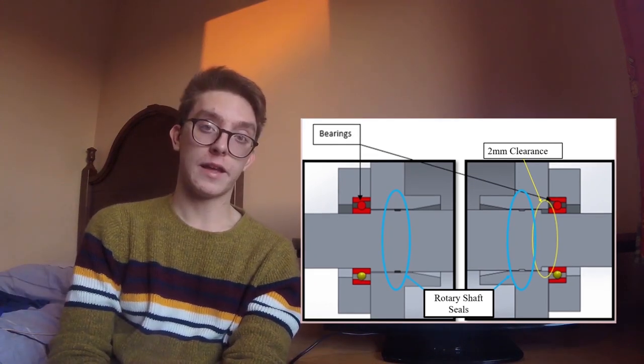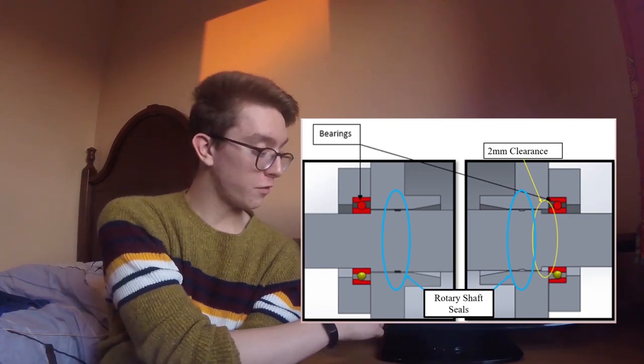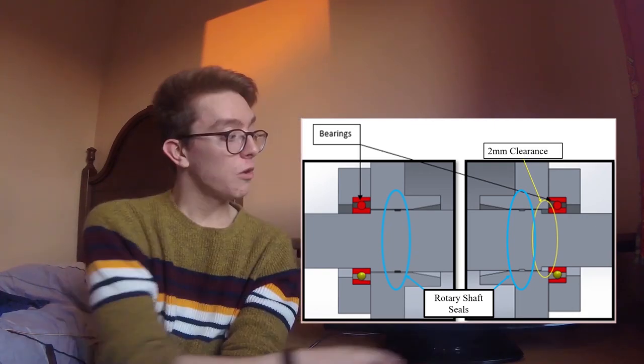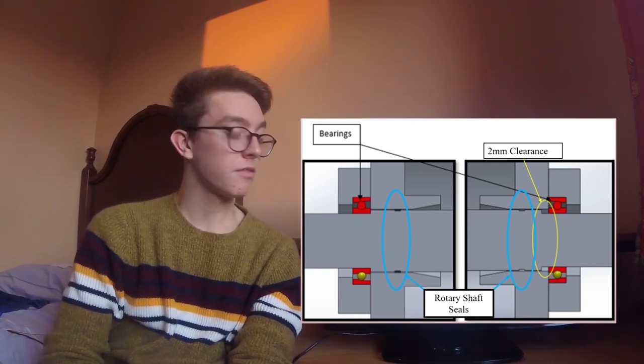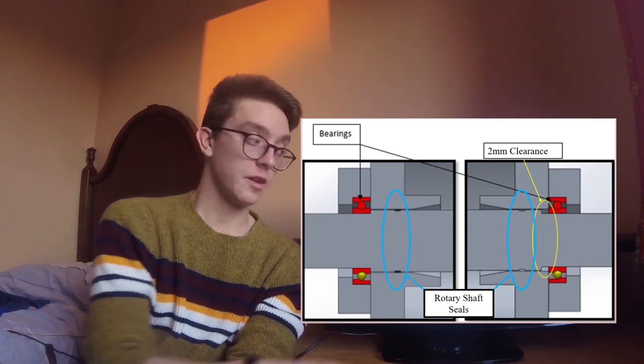The shaft is then held in place using two angular contact hybrid ball bearings with an interference fit on the left and a clearance fit on the left. The yellow circle here indicates a two mil clearance which is available to allow the shaft as it expands permanently.